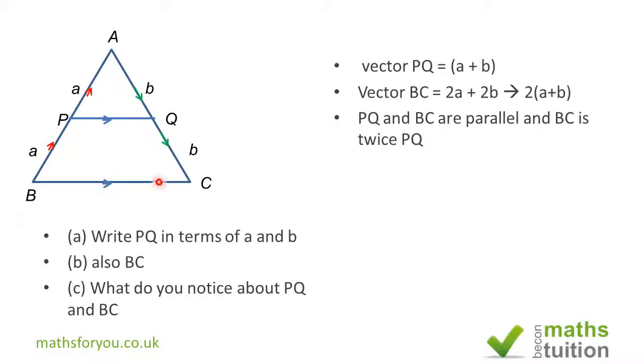So that means vector BC is twice vector PQ, and also they are parallel because they have the same vectors in the same direction. We could have actually worked that out without doing all this—we could have said these triangles APQ and ABC are similar. That being the case, it means that PQ is parallel to BC. The question is what's the magnitude, and that's what you've got here. I hope all that made some sense, and thank you for watching. I'll see you guys sometime. Bye bye!